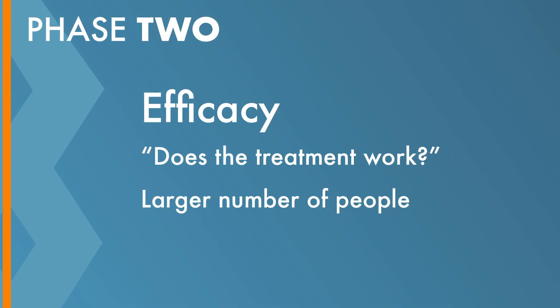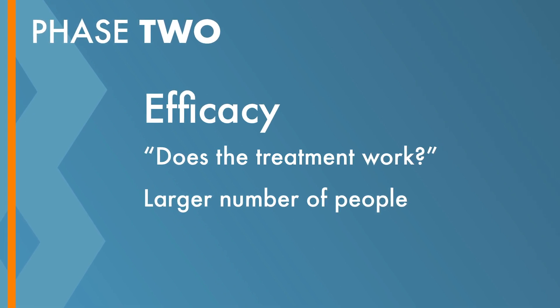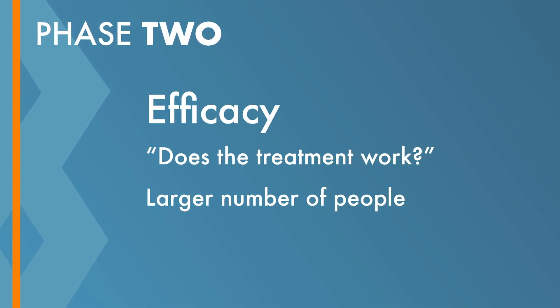When it comes to phase two trials, we've already gone through phase one, so we know it's safe. Now it's a matter of saying: we know it's safe, we know the dose. Does this work in a small sample size of patients? Generally, we'll put patients with a particular type of cancer on this drug, using a small population of about 40 patients, and follow them through to find out: did it work? Did it shrink tumors? Did it prolong survival? And was it safe for the patient?